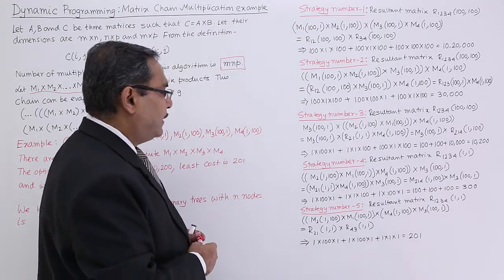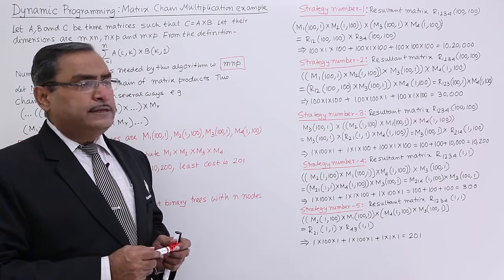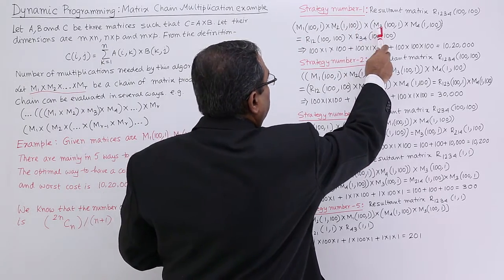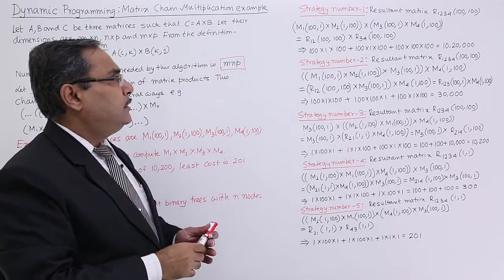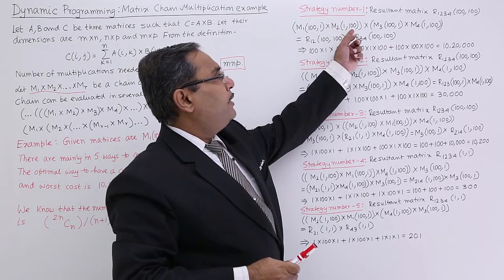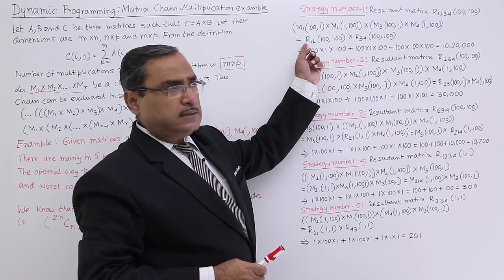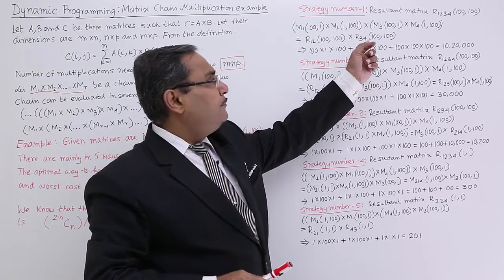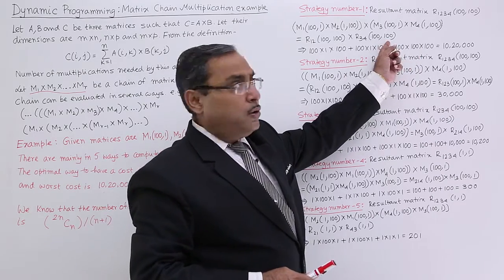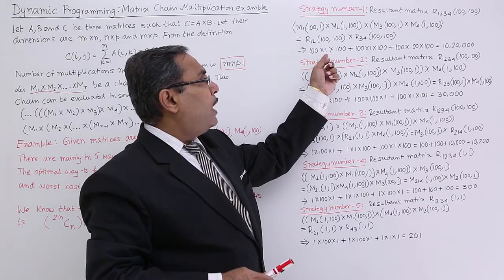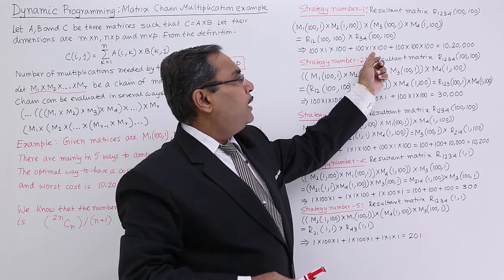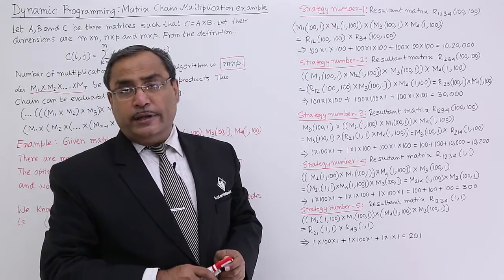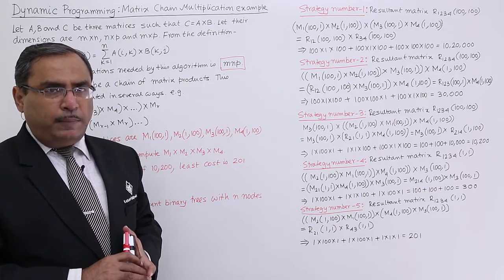Strategy number 1: the resultant matrix R1234 will have size 100×100. We first multiply M1 and M2 to get R12 (100×100), then multiply M3 and M4 to get R34 (100×100), then multiply R12 and R34. Multiplications: 100×1×100 for R12, 100×1×100 for R34, and 100×100×100 for the final step. Total: 1,020,000 — this is the worst case.